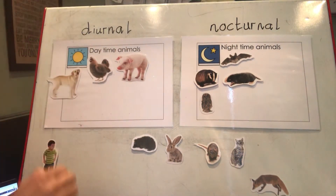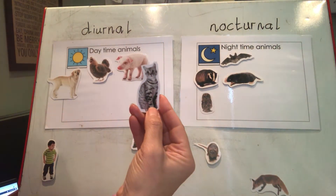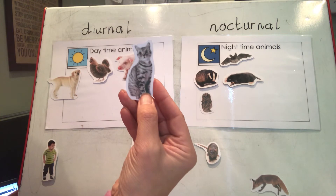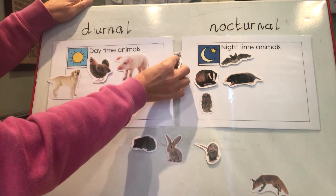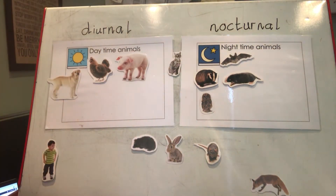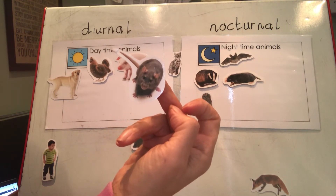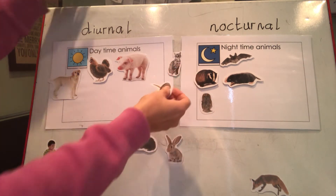Now this is an interesting one — a cat. Are they out at night or during the day? I think that's a bit of a trick, because some cats sleep all day and are out at night, and some sleep at night. So I'm going to put that in the middle. I think it might be the same for a rat — you do see rats in the day, but they also come out at night. On the whole they're more nocturnal, but we'll put them in the middle too.